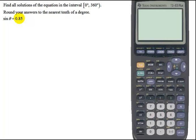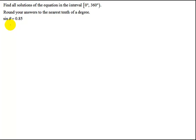Well, 0.85 is not a value on the unit circle, so we're going to have to use our calculator. Theta is going to be found using the inverse sine function of 0.85.